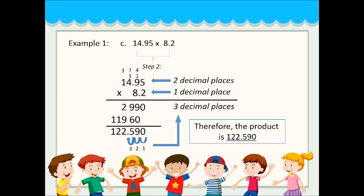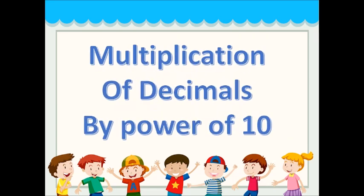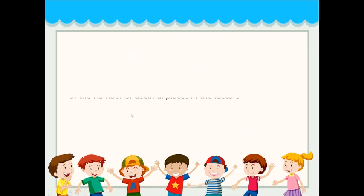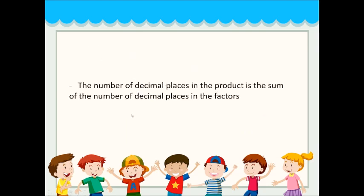Therefore, the product is 122.590. Next: multiplication of decimals by powers of 10. The number of decimal places in the product is the sum of the number of decimal places in the factors.